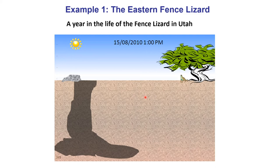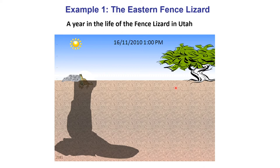Now jumping in months, on the 15th of each month at 1pm. In the middle of August the lizard needs to be in shade and has grown a little. In September it's grown more. In October it's grown further but is now having to stay in full sun in the middle of the day, and its activity window is declining as we go into the cooler months. By November it's too cold even to forage at midday, so the animal goes into its burrow to overwinter.